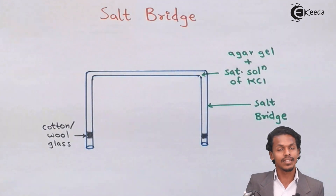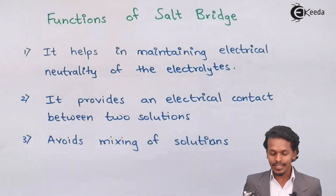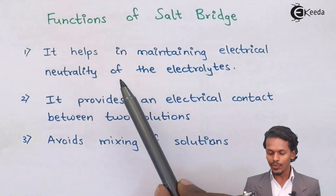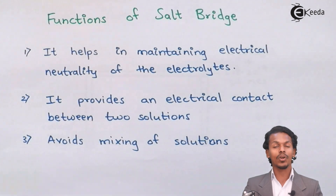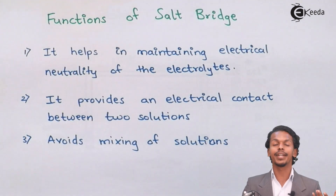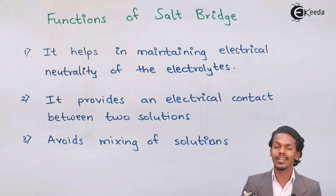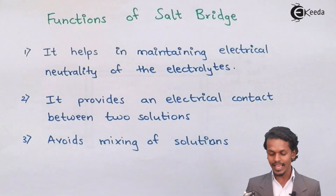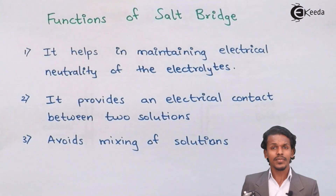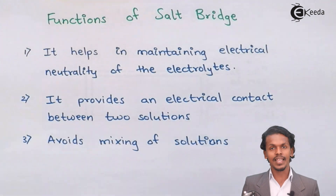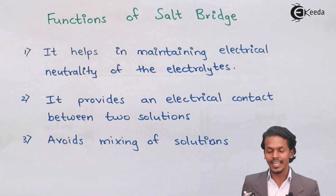Let us see the functions of the salt bridge. The first function is that it helps in maintaining the electrical neutrality of the electrolytes. In a galvanic cell, chemical energy is converted into electrical energy. During this process, electrons from oxidation and reduction are balanced, and the salt bridge plays a very important role in maintaining this electrical neutrality.